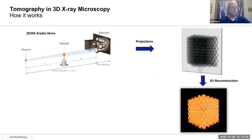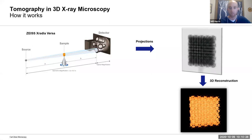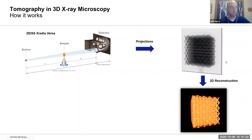Then we use a computer program that does what's called a reconstruction step — basically a computer algorithm that will backtrack and say, based on all those projections, what is the three-dimensional structure that was responsible for creating all of those projections.